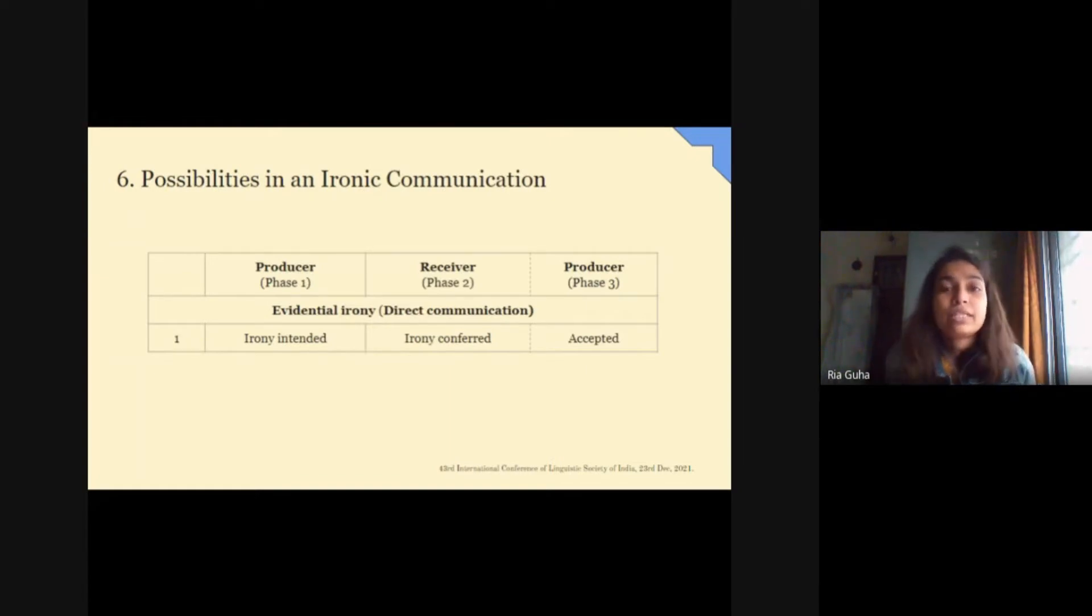Here, we have presented a few possibilities among ironic communication based on the theories we discussed earlier. As you can see, phase 3 is separated by a dotted line because it is not always present in the communication, especially not in indirect communication where the receiver is not in direct contact with the producer like in case of books or films or Twitter posts comments. Number 1 is an ideal ironic communication where the producer intends the irony and the receiver confers it as such.